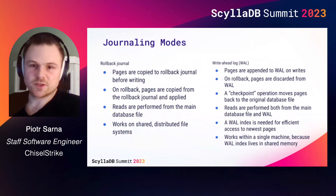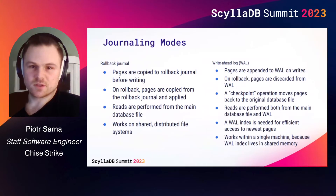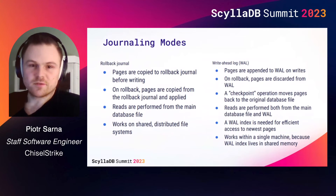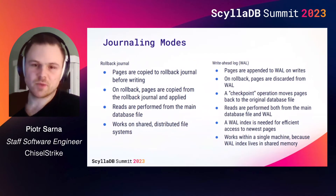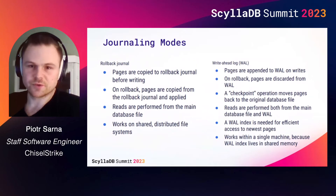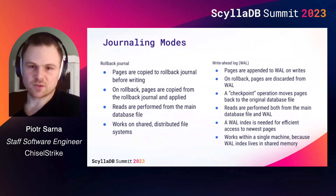Historically, the only journaling implementation in SQLite was a rollback journal. During a write transaction, before any page is written to the main database file, it first gets copied to a rollback journal. Then if the transaction commits, the journal can be deleted or ignored. During rollback, pages from the journal can be copied back to the main database file, simply overwriting whatever the transaction tried to write before.